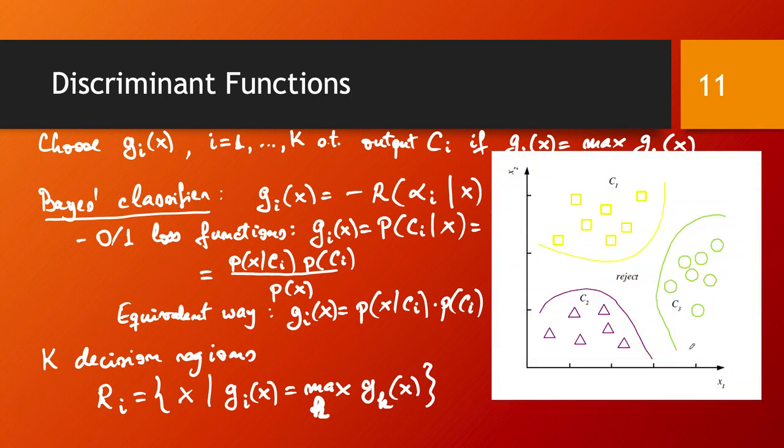Visually speaking, we have a situation like this where we have, in our case on this example, three decision regions. Any point, any input falling into one of these regions will have a clear decision. Now, the space in between the decision regions is all about inputs for which the maximum discriminant function on that input is not unique, meaning that this is a case of doubt.